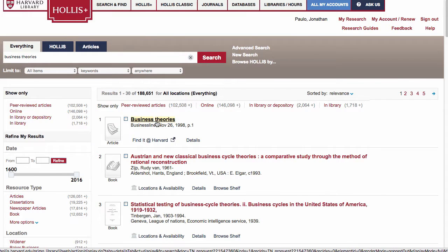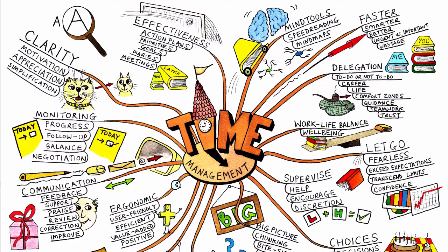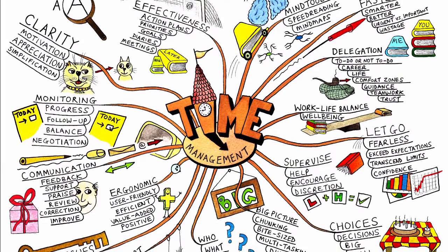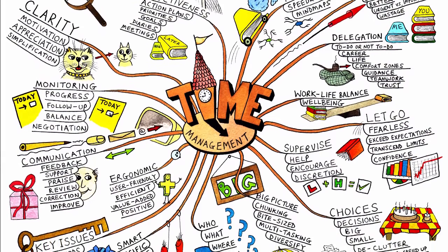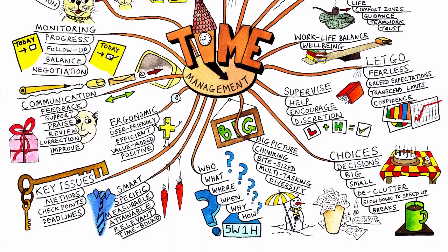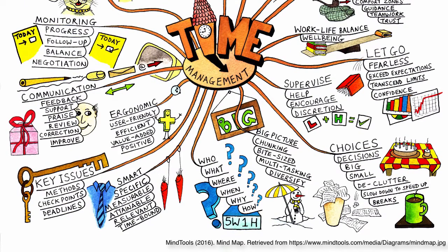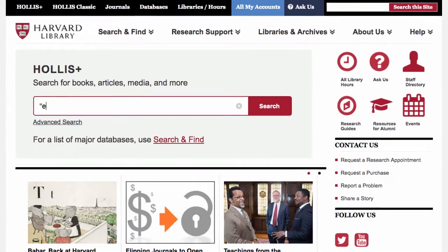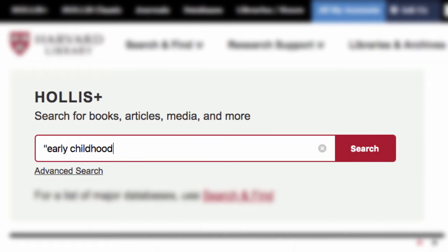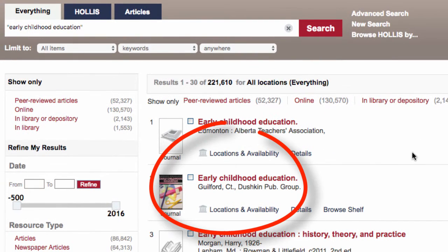So brainstorm your topic. Think of what interests you the most. If you're spending time on your work, you might as well make it interesting and learn some cool stuff along the way. Think about synonyms, related terms, and broader and narrower areas of your topic. Then use some database tricks. If you have a phrase, like "early childhood education," put those words in quotation marks and find results with those words in that exact order.